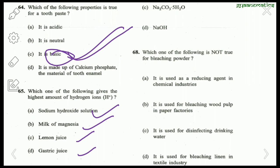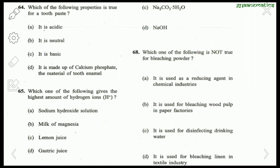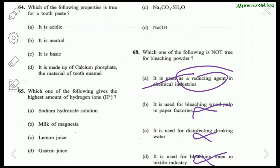Question 66 (bleaching powder): Which statement is not true? 'It is used as a reducing agent in chemical industry' — this is the wrong statement. 'It is used for bleaching wood pulp in paper factories,' 'disinfecting drinking water,' and 'bleaching linen in textile industry' are all correct. Bleaching powder is not used as a reducing agent in chemical industry, so the answer is A.